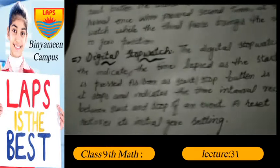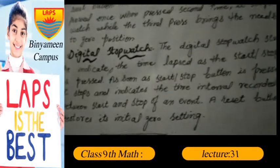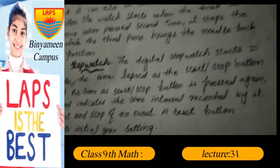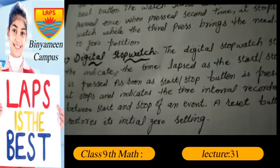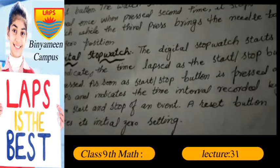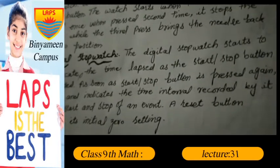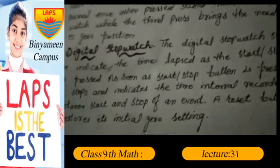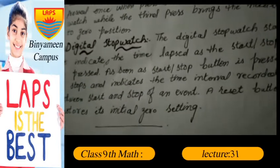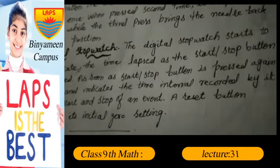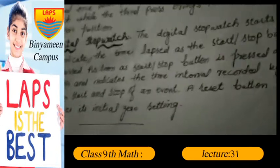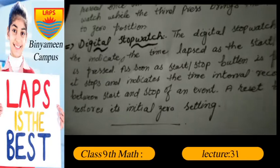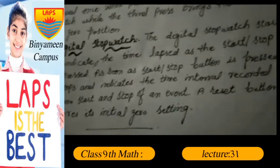The digital stopwatch starts to indicate the time lapse as the start/stop button is pressed. As soon as the start/stop button is pressed again, it stops and indicates the time interval recorded between start and stop. A reset button restores its initial zero setting.